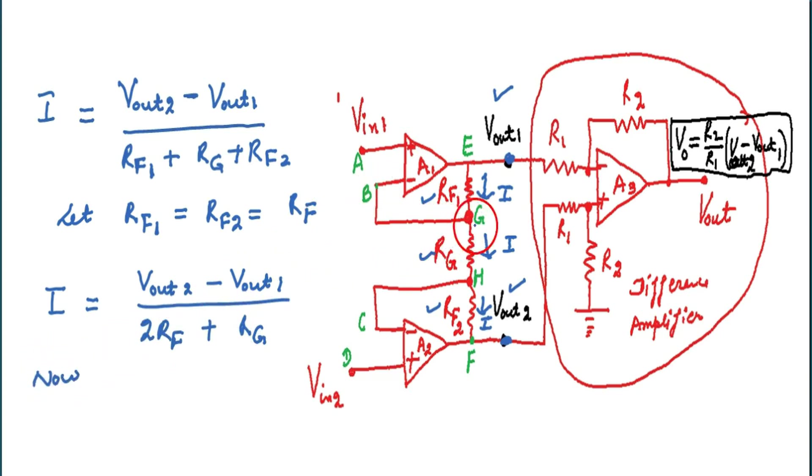Now let we again write the current using G and H points. You know, whatever the voltage at E, the same will be at B. Whatever at D, the same will be at C. And H will be H and G. The voltage at G will be at C. The voltage at G will be same as that at B, that is Vin1, and voltage at H will be same whatever at C, that is V.